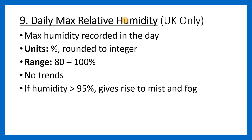The ninth measurement is daily max relative humidity. This is the maximum humidity recorded throughout the day — a percentage to the nearest integer, and the range of values is 80% to 100%. I don't think there are any real trends here. However, the book mentions that if humidity is greater than 95%, this can give rise to mist or fog. As this is mentioned in both the book and the Excel spreadsheet for the large data set, I think it's possible they could ask about this at some point.